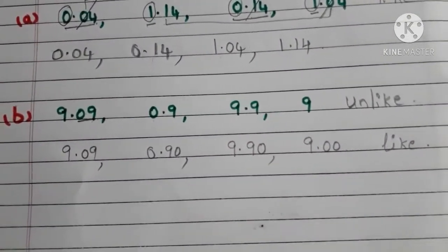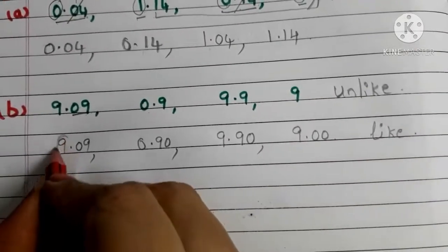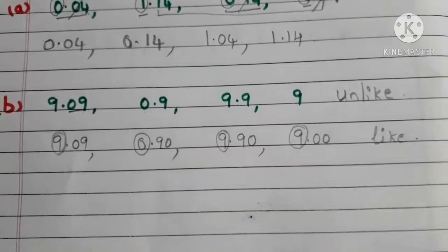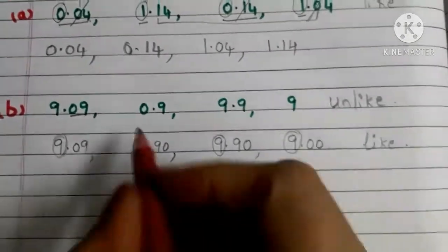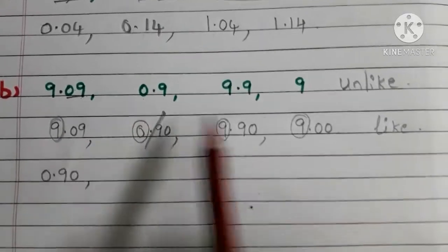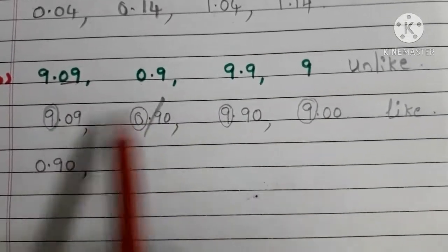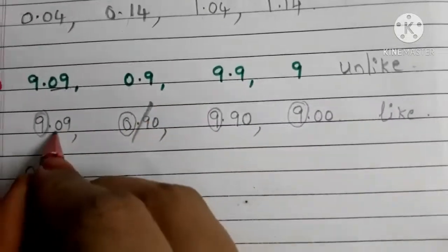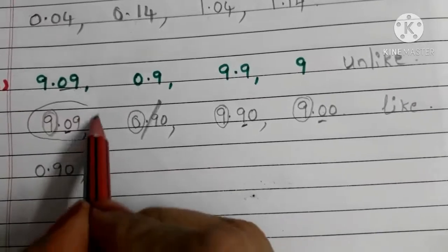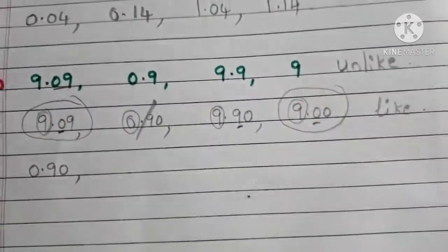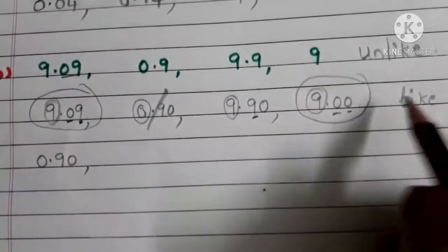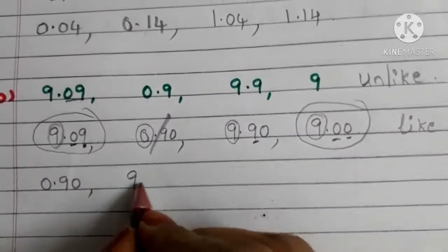Now we have to find which one is the smaller one. First compare the whole number parts: 9, 0, 9, 9. See, 0 is smaller than 9, so 0.90 comes first. Strike off and write 0.90. Next we have 3 numbers whose whole number parts are equal, so compare the 10th digits. Here 0 is there, here 9 is there, here 0 is there. Since 0 is less than 9, compare the 100th digits for those two numbers with 0 in the 10th place. Here 9 is there and here 0 is there, so 0 is smaller — 9.00 is the next smaller number.